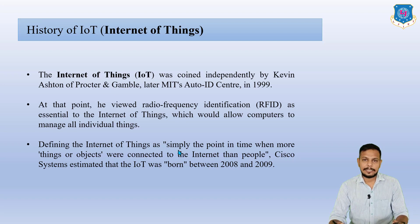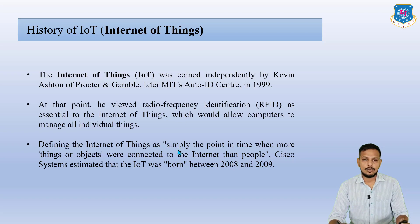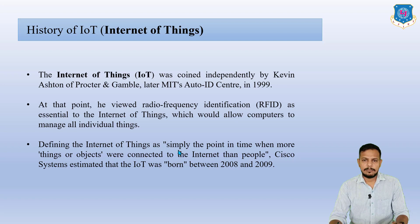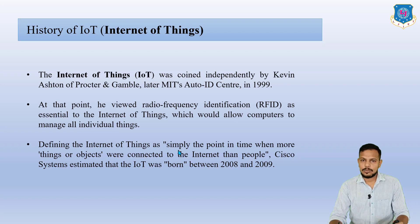At a toll gate, the system is connected to a server which detects your RFID code through a sensor, processes the information, and then the gate opens so you can move forward. RFID defines the Internet of Things as the point in time when more things or objects were connected to the internet than people. Cisco Systems estimated that IoT was born between 2008 and 2009.